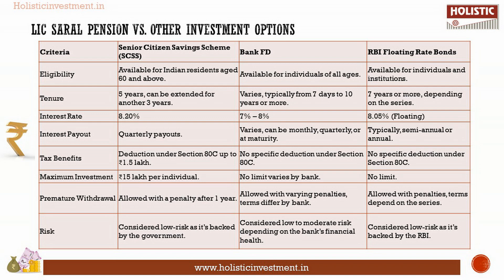Bank FDs and the Senior Citizens Saving Scheme offer fixed returns throughout the tenure; however, the interest rate varies for RBI Floating Rate Bonds. The current interest rate for Senior Citizens Saving Scheme is 8.2%, for bank FDs it ranges between 7% and 8%, and for RBI Floating Rate Bonds it is 8.05%. These are low-risk investments backed by government, banks, and RBI respectively. Liquidity-wise, premature withdrawal is allowed with small penalties. However, the return and liquidity are poor under LIC's RL Pension plan.